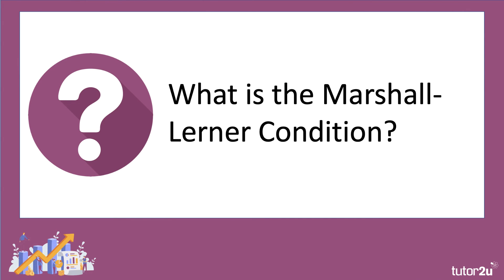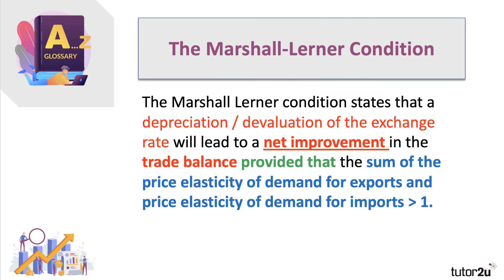This leads us to the Marshall-Lerner condition. You don't have to prove this in an A-level economics or IB exam — you just need to know what it is. The Marshall-Lerner condition states that a depreciation or devaluation of the exchange rate will lead to a net improvement in the country's trade balance over time, provided that the sum of the price elasticity of demand for exports and the price elasticity of demand for imports is greater than 1. Providing that figure is greater than 1, the trade balance will improve over time.